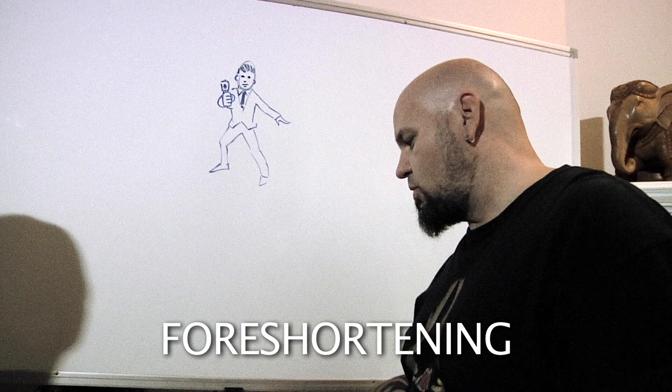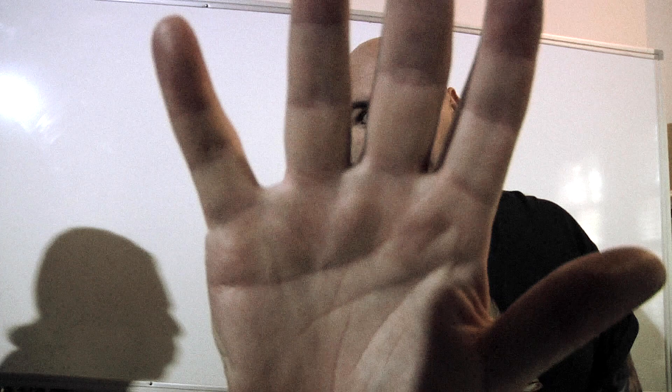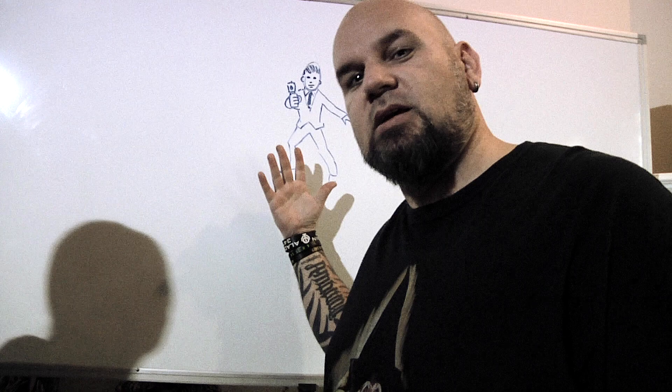Where you're at right now, if I hold my hand right next to me, my hand looks like this. But if my hand comes closer, it just got a lot larger. My hand didn't actually get larger — it's just that objects closer to you advance and appear larger, and objects that move away from you recede and appear smaller.